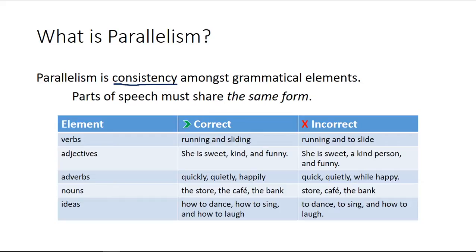That can be applied to many grammatical elements — from verbs, adjectives, adverbs, nouns, and even ideas — where you want to use parallel structure. The test prefers consistency. It likes parallelism, so you want to look for that when you're choosing your answers.